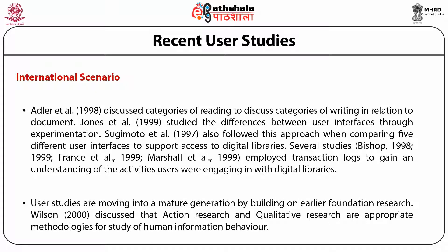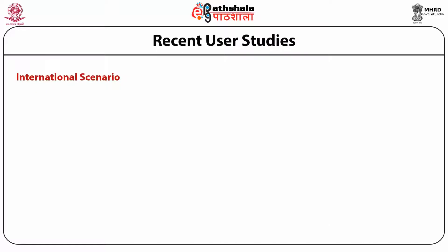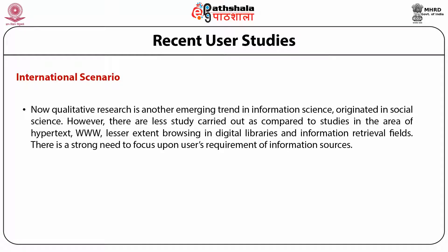User studies are moving into a mature generation by building on earlier foundational research. Wilson in 2000 discussed that action research and qualitative research are appropriate methodologies for the study of human information behavior. Qualitative research is another emerging trend in information science, originating in social science. However, fewer studies have been carried out compared to those in the areas of hypertext, WWW, browsing in digital libraries, and information retrieval. There is a strong need to focus on users' requirements of information sources.